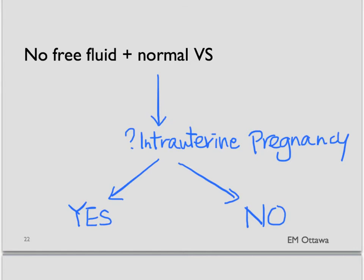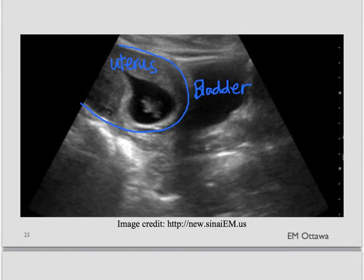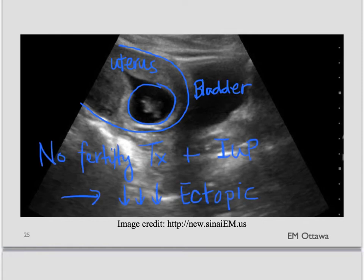In this patient, we can see an intrauterine pregnancy in the uterus. In a patient who is not undergoing fertility treatment, the presence of an intrauterine pregnancy significantly decreases the risk of an ectopic pregnancy and is very reassuring. If the patient remains stable, they can likely go home and follow up with their own doctor. In patients undergoing fertility treatment, however, the presence of an intrauterine pregnancy does not rule out an ectopic, because multiple gestations may have formed.